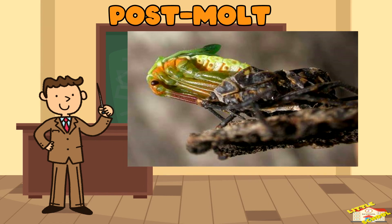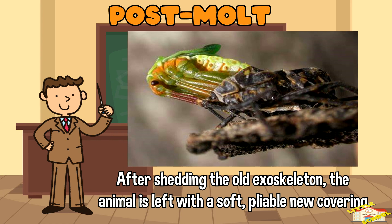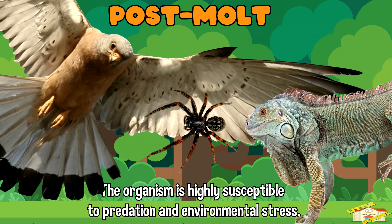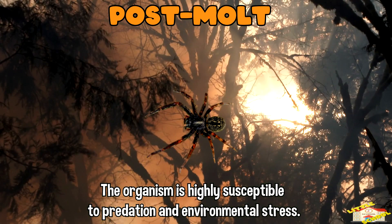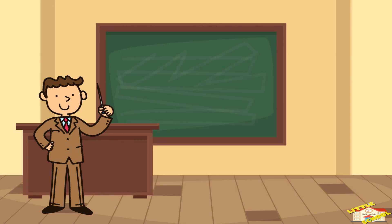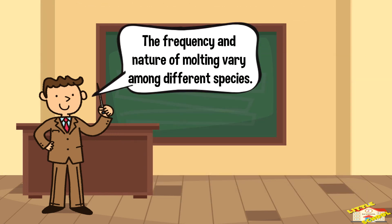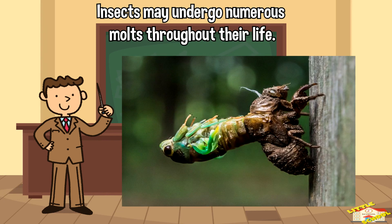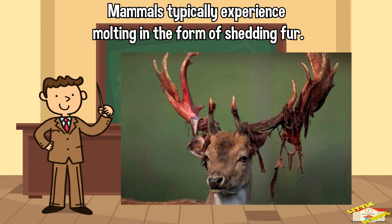Post-molt: after shedding the old exoskeleton, the animal is left with a soft, pliable new covering. At this stage, the organism is highly susceptible to predation and environmental stress. It takes time for the new exoskeleton to harden and fully develop. The frequency and nature of molting vary among different species — insects may undergo numerous molts throughout their life, while mammals typically experience molting in the form of shedding fur.